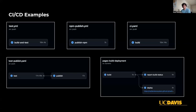For our Quickstart repository, we have a pages build deployment. Since it's a website, we build and report the build status, and once the build is successful, it is deployed using GitHub Pages and GitHub Actions.